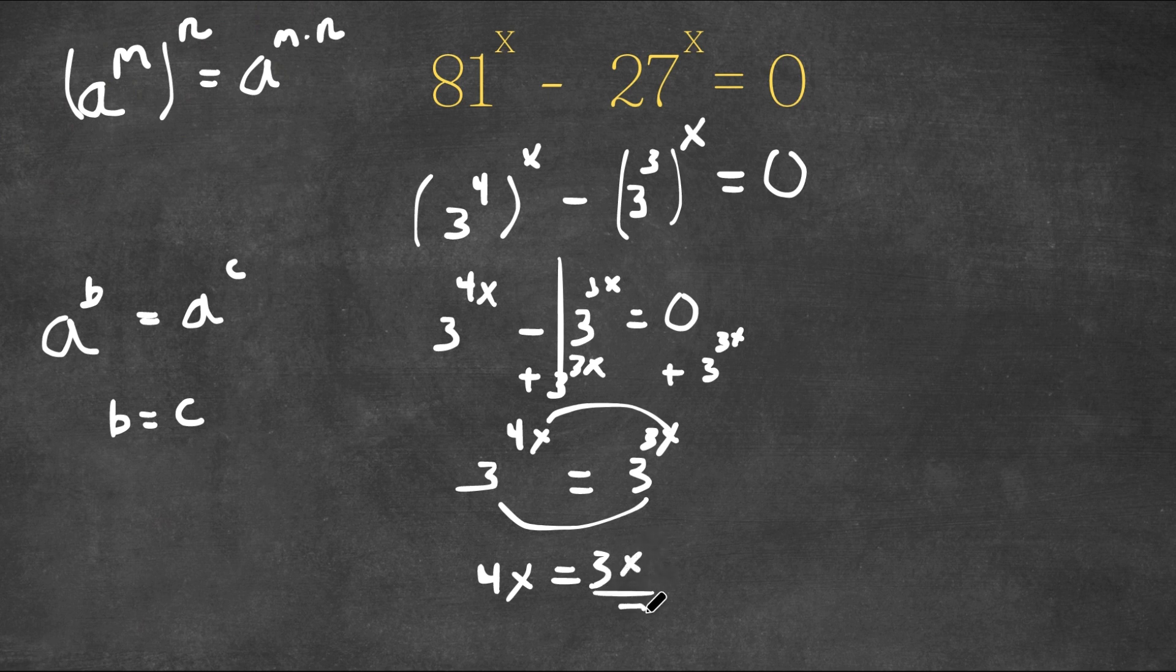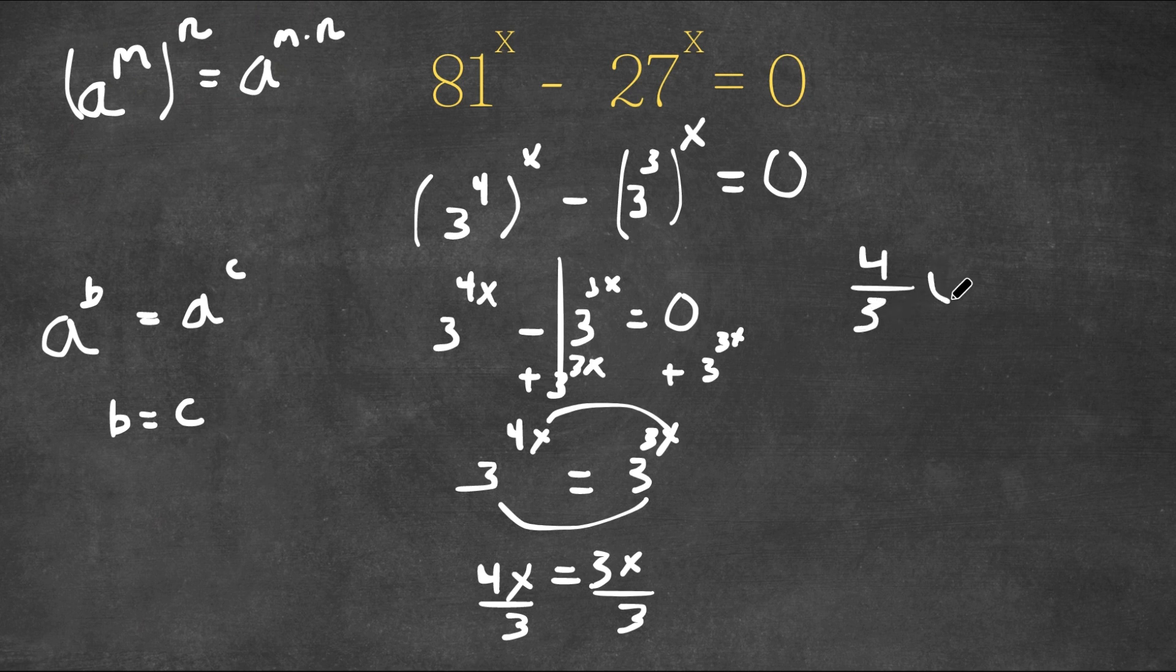So now if I divide by 3 on both sides, I get 4 over 3x is equal to x.